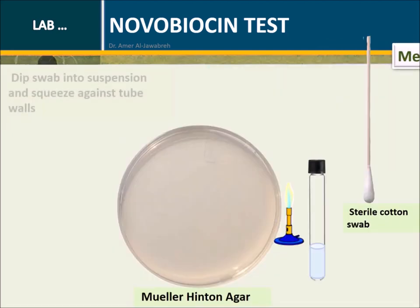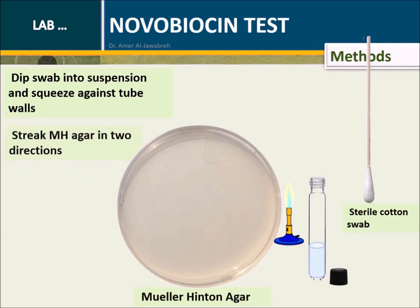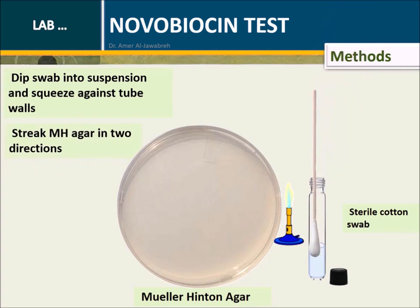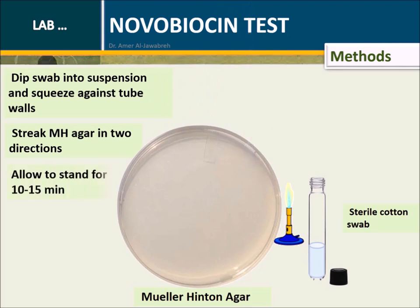Methods: Dip swab into suspension and squeeze against tube walls. Streak Mueller-Hinton agar in two directions. Allow to stand for 10 to 15 minutes.